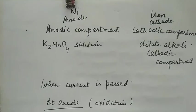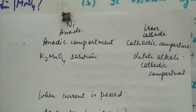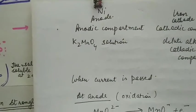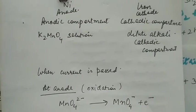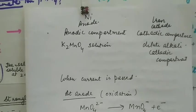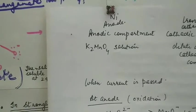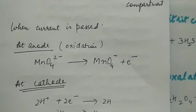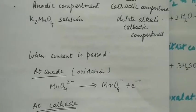For this, we use nickel as anode and iron as cathode. Anodic compartment contains potassium manganate, cathodic compartment contains alkali. When current passes, at anode, potassium manganate gets oxidized into permanganate, and at cathode, hydrogen ions gain electrons to form hydrogen gas.